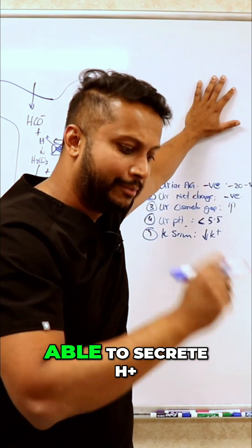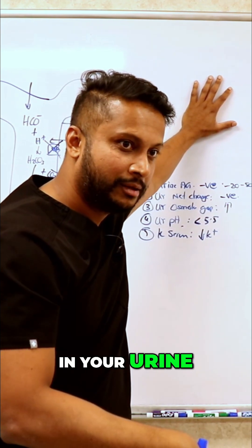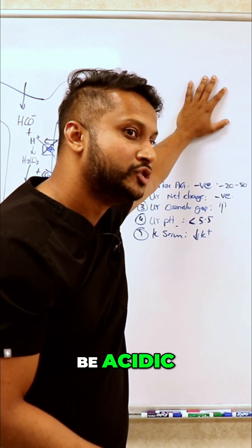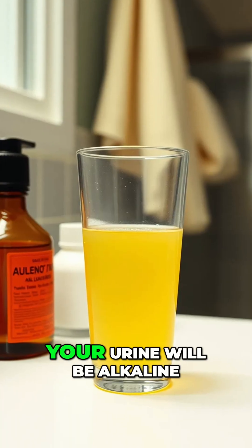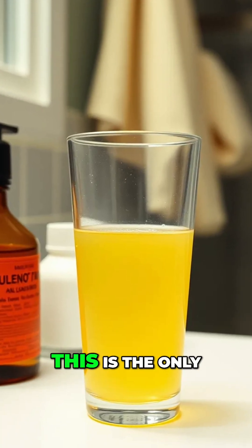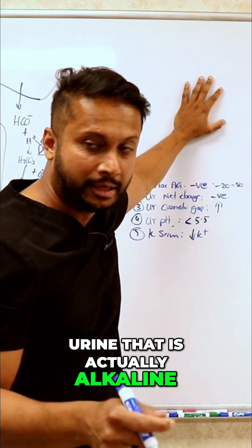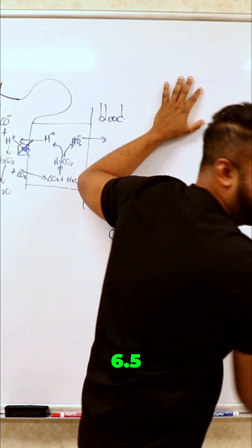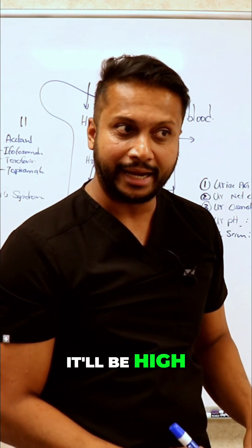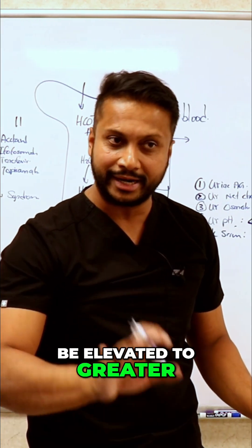It will not be acidic. Despite your blood being acidic, your urine will be alkaline. This is the only time you'll have a urine that is actually alkaline. The urine pH here will be elevated to greater than 6.5.